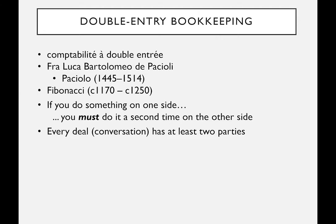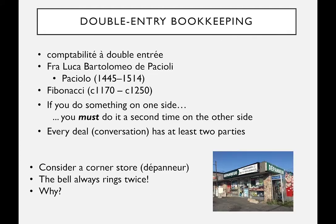The key idea is that every transaction gets recorded twice — there are two ways to record it. This is rather logical because in any transaction there's a buyer and a seller. Consider a corner store: there's always a bell at the door, and the bell always rings twice.